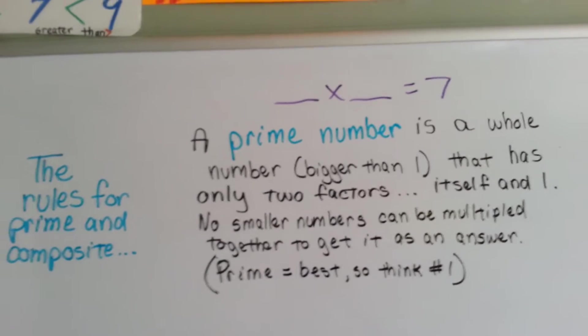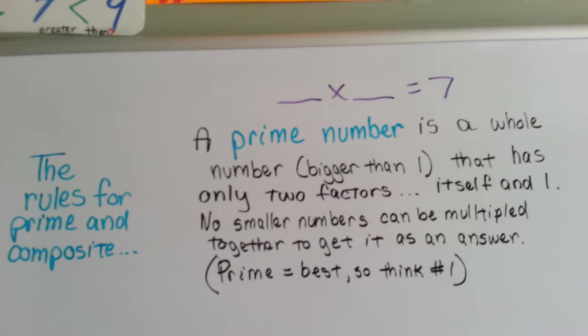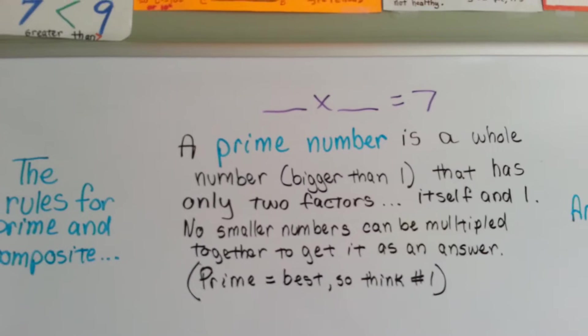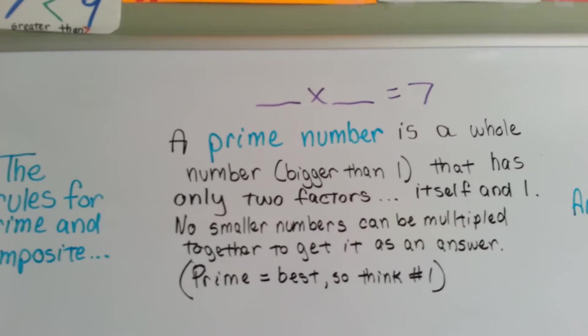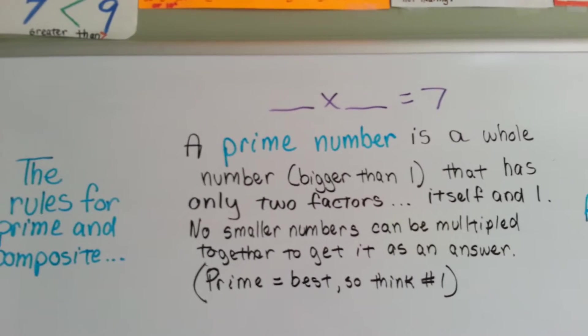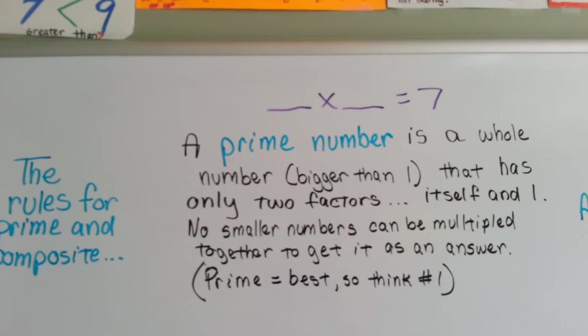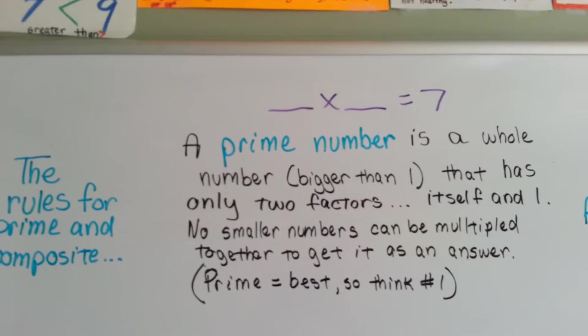You know how prime rib is like really good meat? Prime is supposed to be best, it's number one. So think of prime, number one, and you'll remember that a prime number is the only one that can be multiplied by itself and one. No other number can be multiplied to get it.